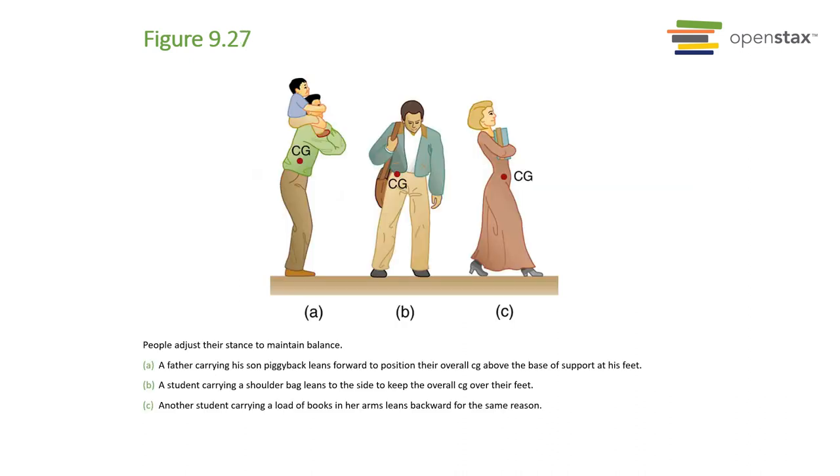Same thing with holding items. You have a system like father and child. Now if the man stood up straight, the child would be back here pulling him backward into a torque. So what he does to avoid that is he simply leans forward just a little bit to compensate for the mass of the child. So the system center of mass is still over the base and is stable.